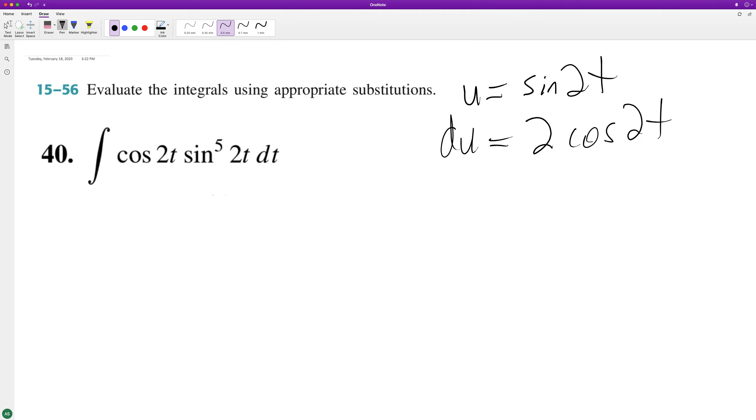The only thing that's wrong here or that we need to do is we need to multiply du by one half in order to get it equal to dx because there's cosine 2t, but there's no 2.